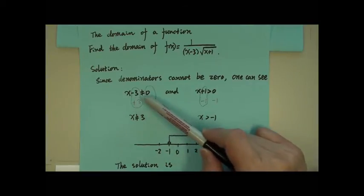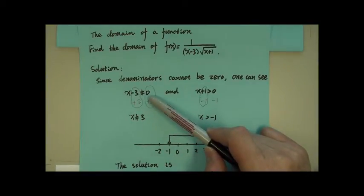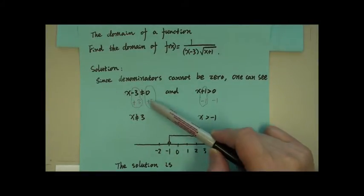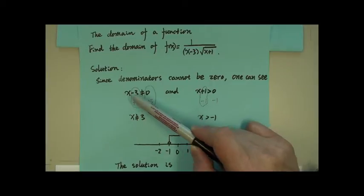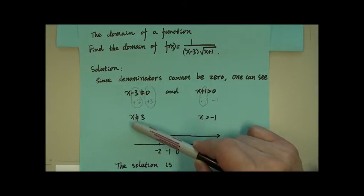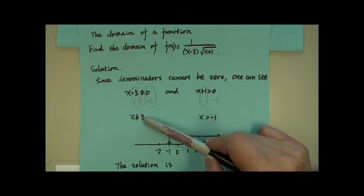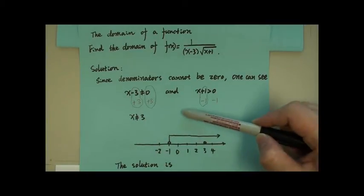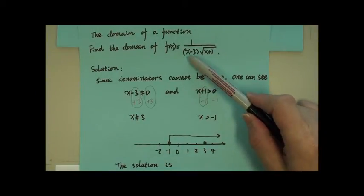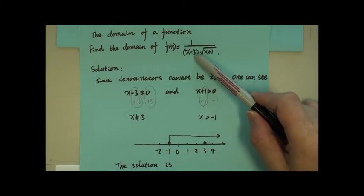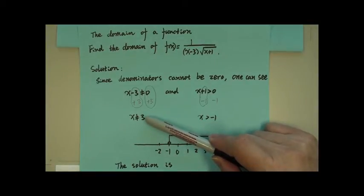So x minus 3 cannot be zero. Then both sides add 3, so negative positive 3, you have x on the left, zero plus 3 on the right. So x cannot be positive 3. If you plug in positive 3, you can see here clearly 3 minus 3 is zero, so x cannot be positive 3.